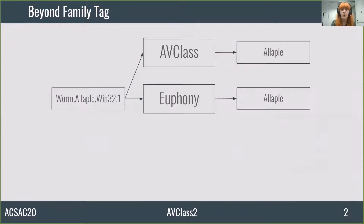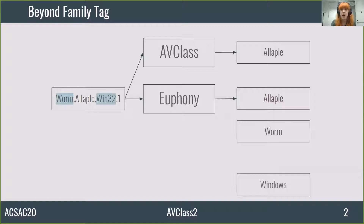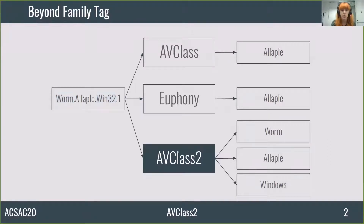There are some tools which operate with these AV labels. AV Class and Euphony take the AV labels and extract family tags from them. For instance, these tools will say that the sample with the label on the left is from the family OLAPL. However, there is much more information encoded in the AV labels that we can extract. In this example, we could get that it is a worm operating in Windows. So, with the purpose of extracting as many tags as we can from the AV labels, we developed AV Class 2.